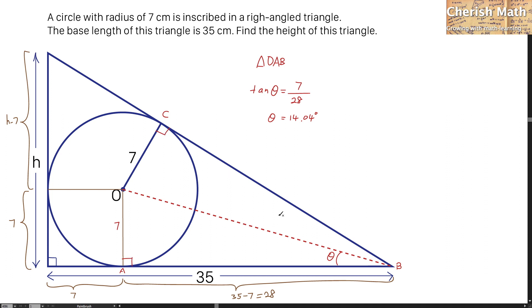I can now conclude that the triangle OAB and the triangle OCB are congruent to each other. That means 14.04 degrees is here and on the top part here as well.